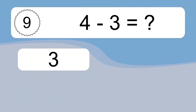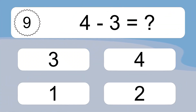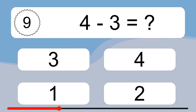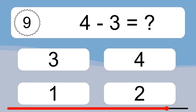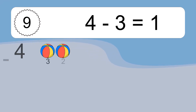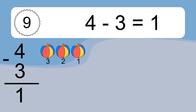4 minus 3 equals what? 4 minus 3 equals 1. Let's count it. 3, 2, 1.